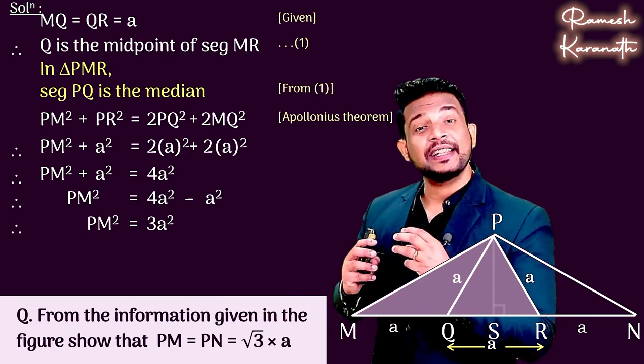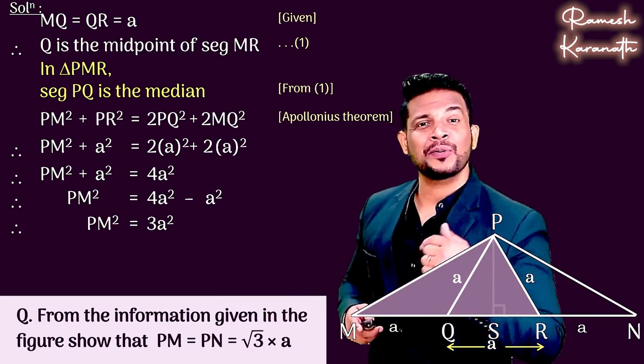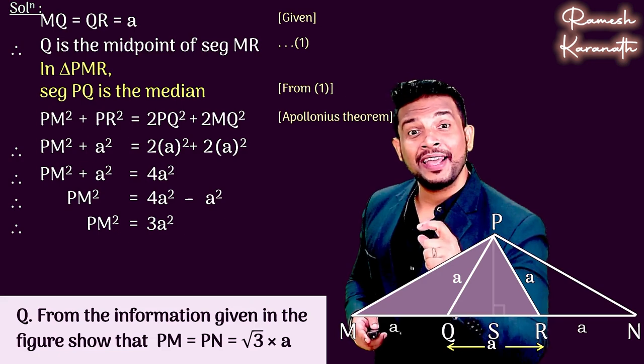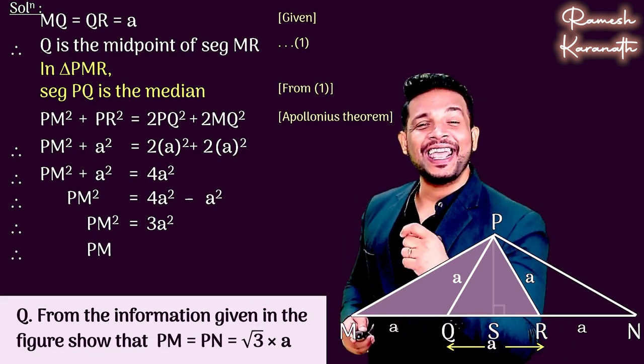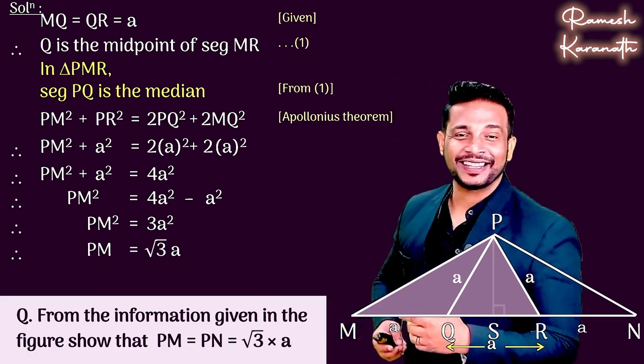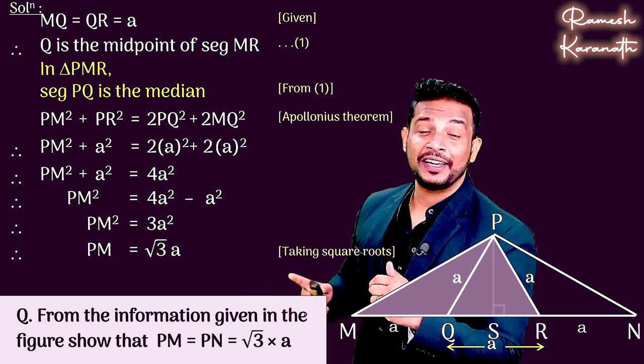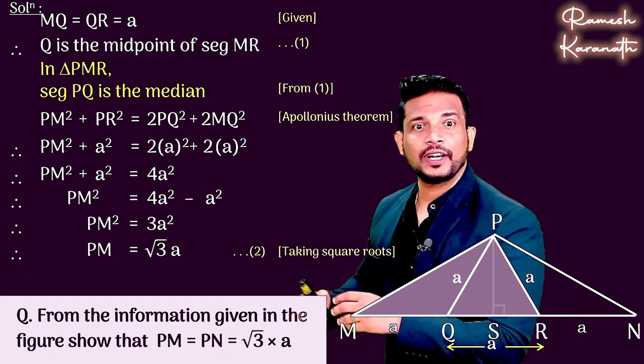PM's length we need to find. PM square is 3a square. So square root of 3a square. Square root of 3a square is what? Root 3 times a. That means PM is equal to root 3a. That is result number two.